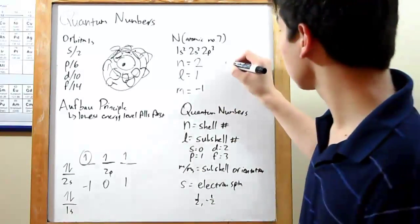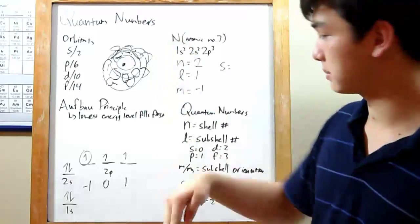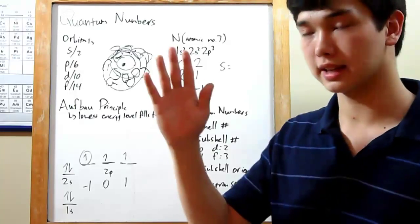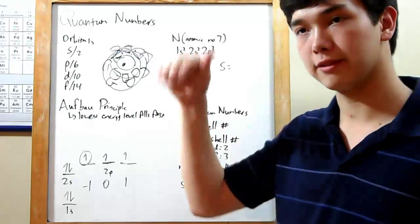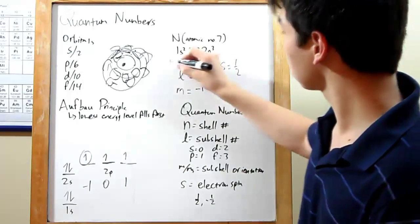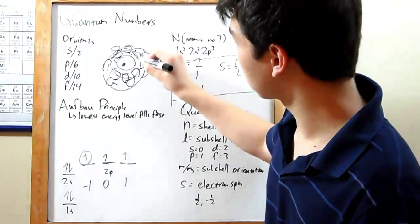Last is s, our electron spin. I told you how electrons spin already. Some spin up, some spin down. Well, s is only two values. Positive 1 half for its electron spinning up, and negative 1 half if it's spinning down. This one's pointing upward, an upward spin, so positive 1 half.